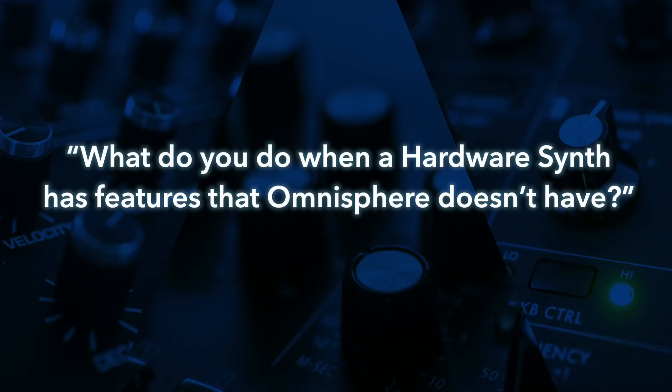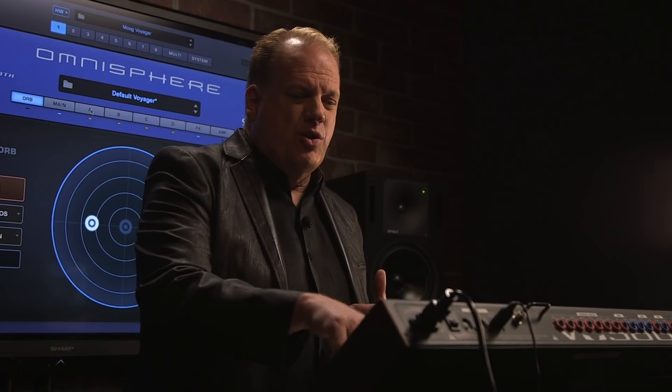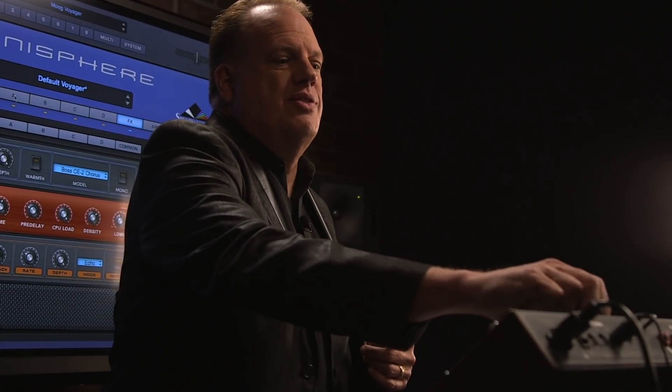Next question: What do you do when a hardware synth has features that Omnisphere doesn't have? Great question. We either try to develop these features and add them into Omnisphere — which is actually what we did, and one of the main reasons we decided to change the architecture from two layers to four layers and added a state variable filter and many other things. Or we assign that control to something the hardware synth doesn't have but is really useful — like the external input on the Voyager, which turns into an effect send. Super useful because the Voyager doesn't have effects.